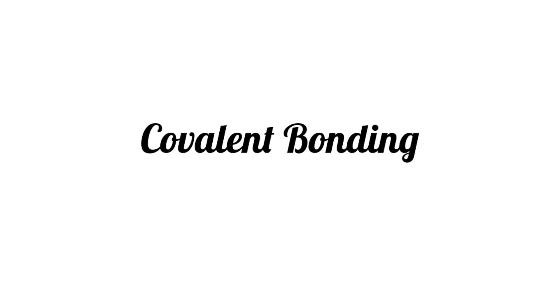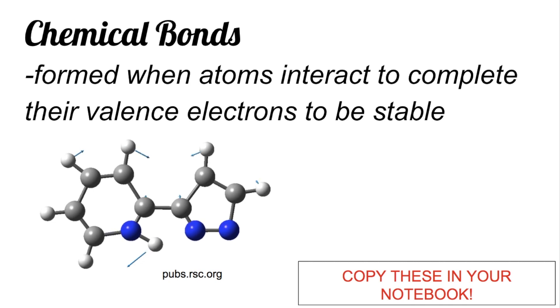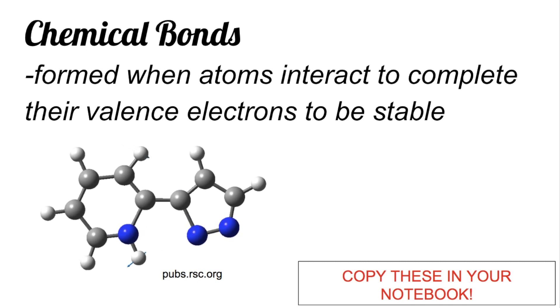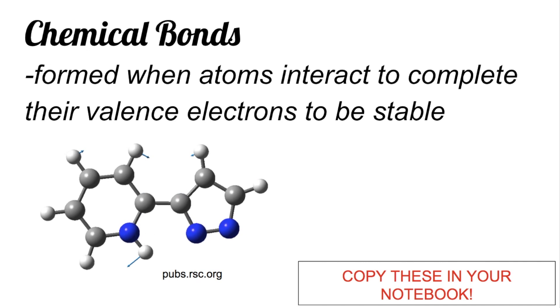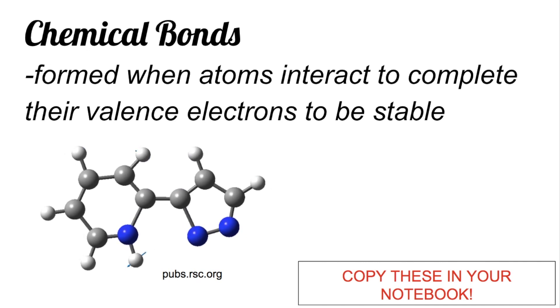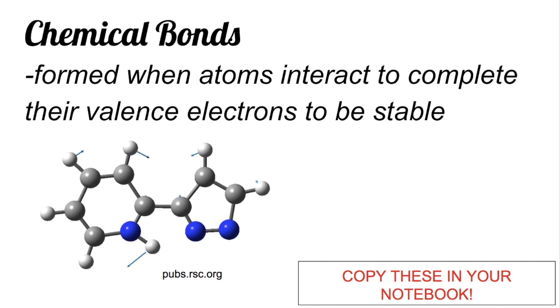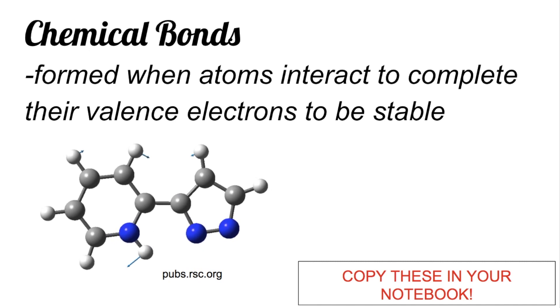Good day, everyone. Today's topic is covalent bonding. We start with the definition of chemical bonds first. Chemical bonds are formed when atoms interact to complete their valence electrons to be stable. Atoms only interact and form bonds because they want to become stable.